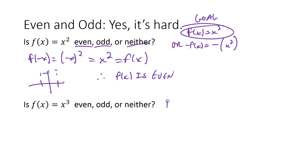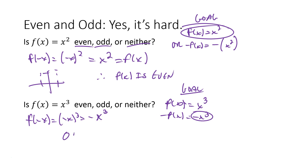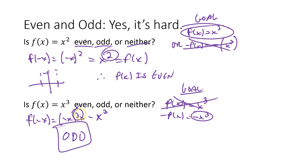Let's try it with x³. f(x) = x³. The negative f(x) goal would be negative x³. We plug in f(-x) = (-x)³, and when you cube a negative number it preserves the negative, so that's negative x³. Like negative 2 cubed is negative 8. That is the opposite of the original function, so we have an odd function. The odd exponent preserves the negative; the even exponent does not — which is why they call them odd and even functions.